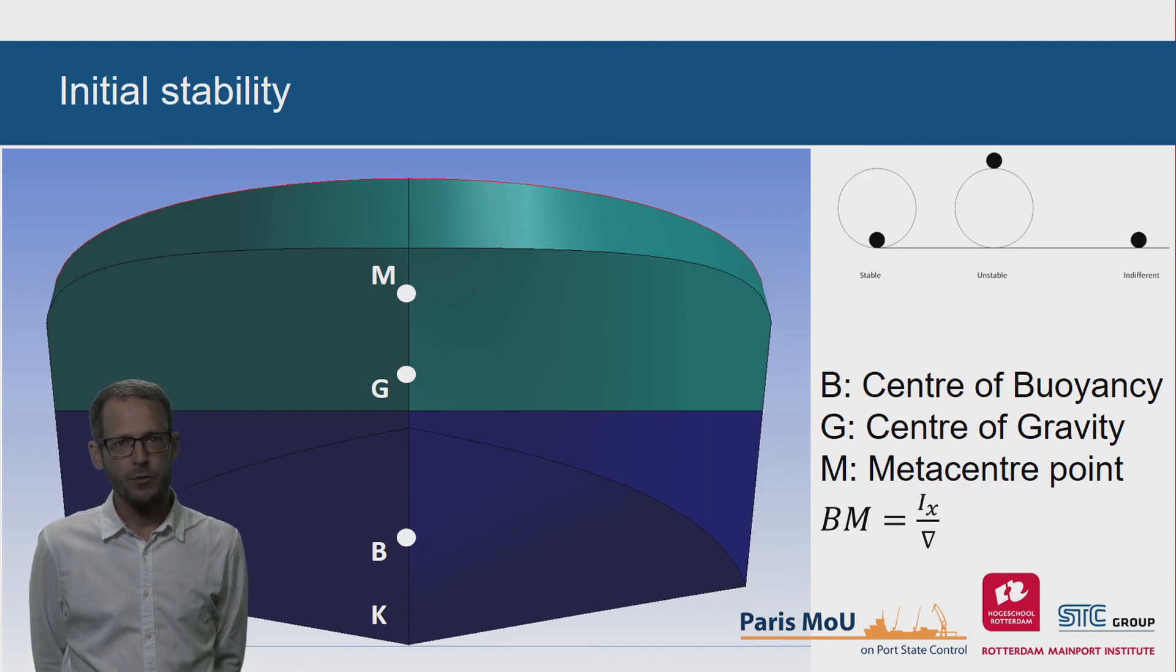GM is the measure for initial stability. A positive GM results in a positive GZ, and a positive righting arm when the ship is heeled.